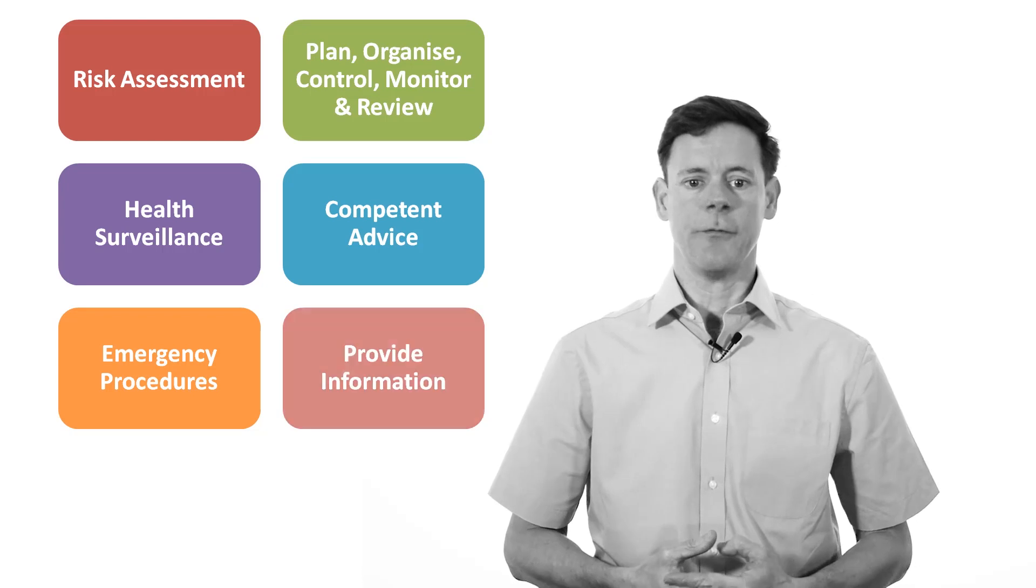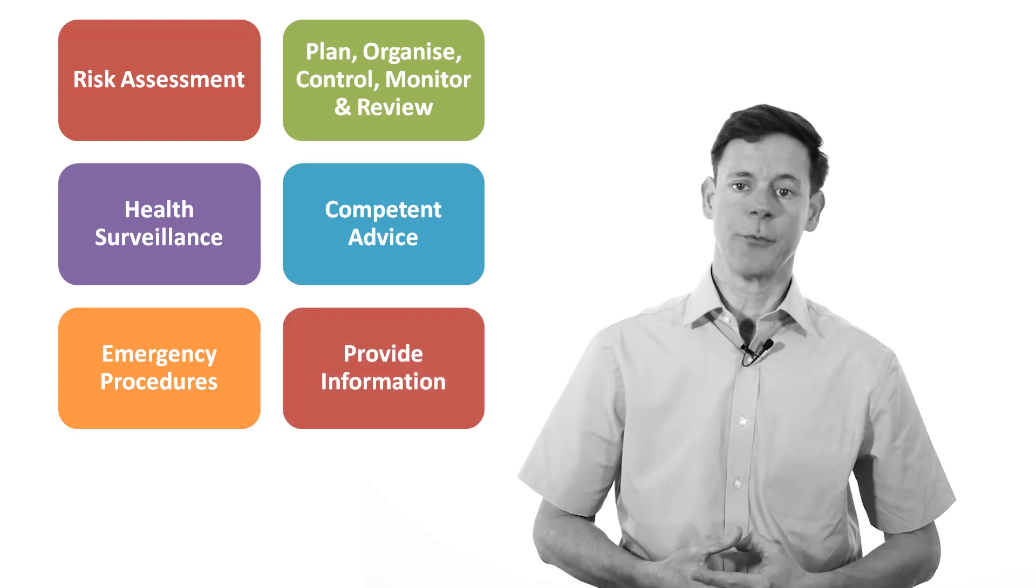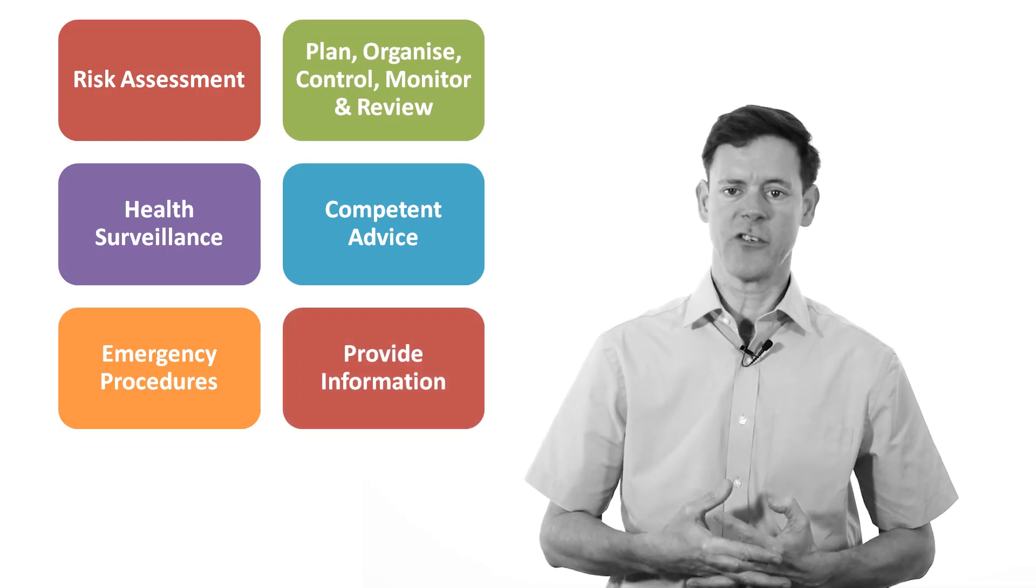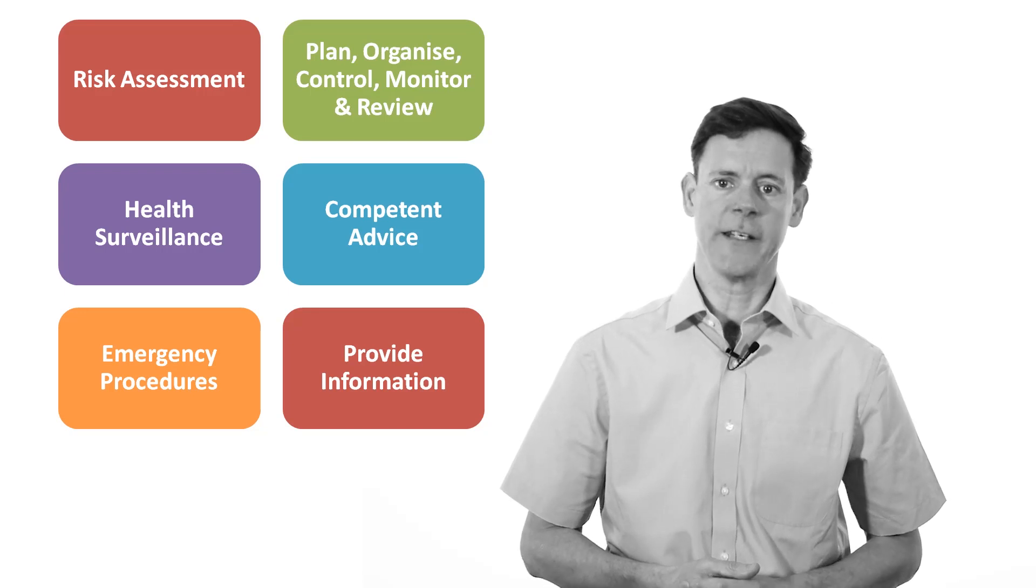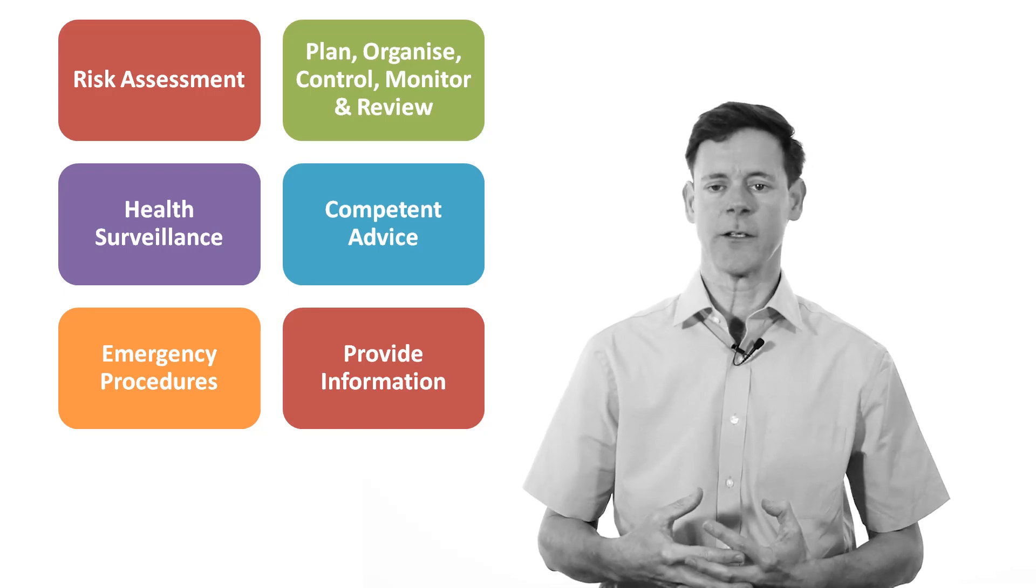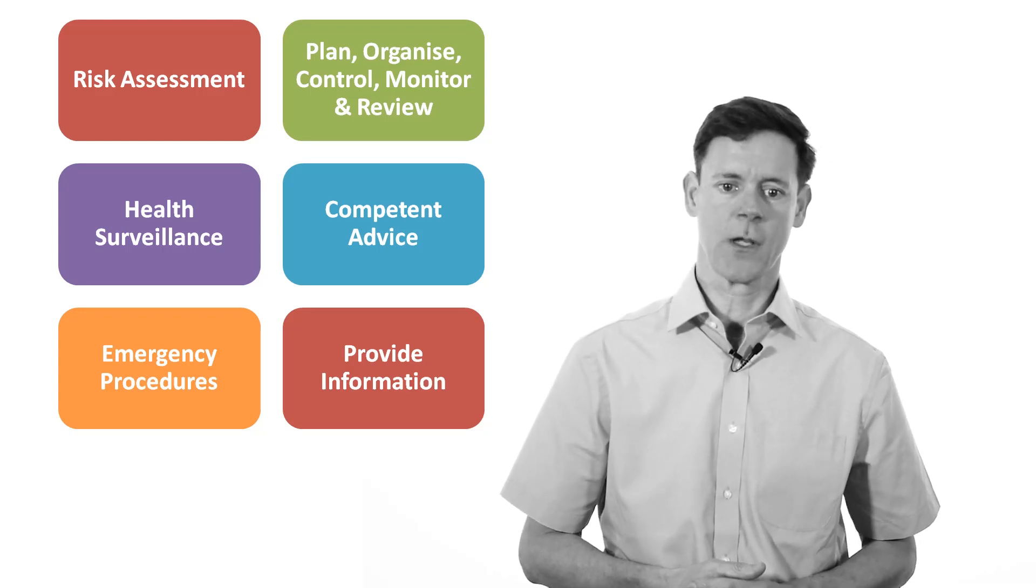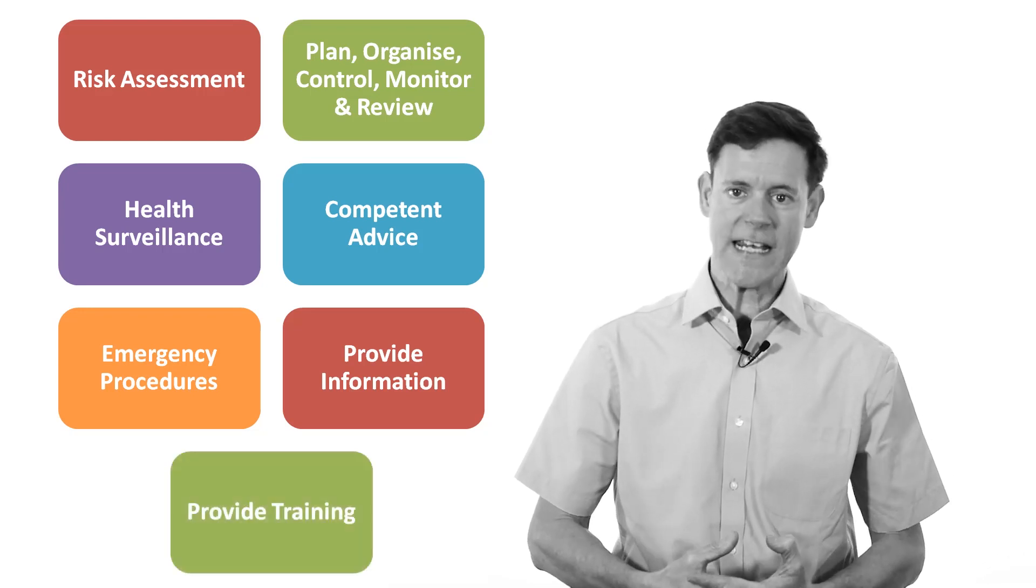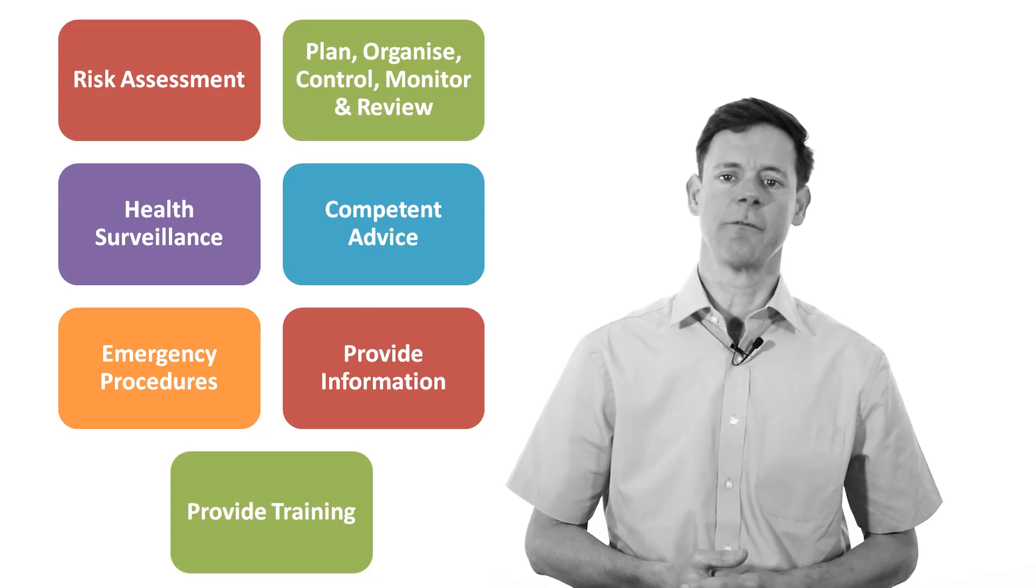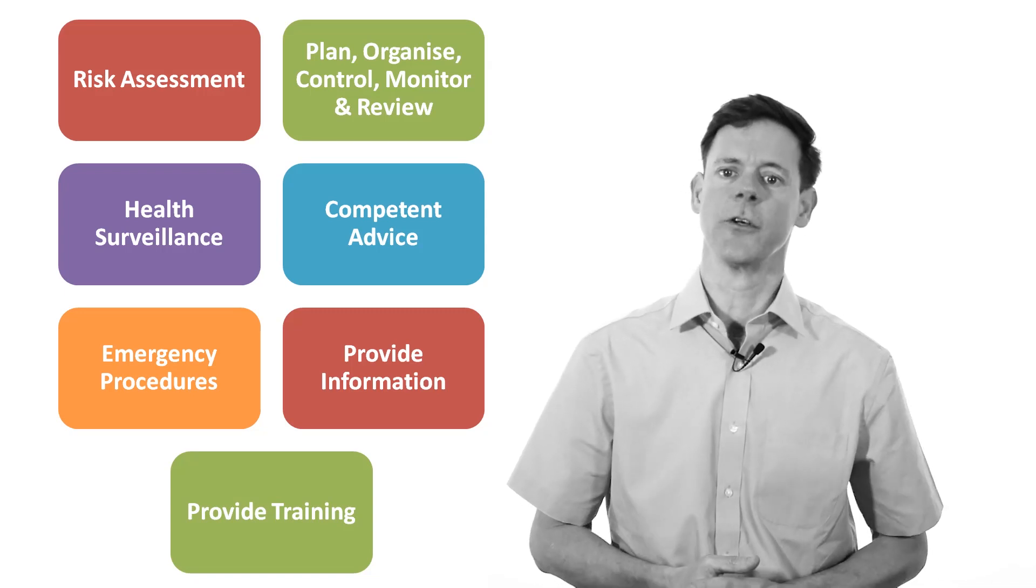The employer must also provide his employees with appropriate health and safety information. This needs to be done in a comprehensible form. They need to understand the risks, they need to understand the control measures, and they need to understand any relevant emergency procedures. The employer is also going to have to train employees, and this might be done, for example, at induction on first recruitment.